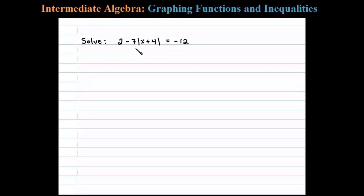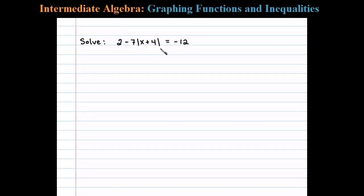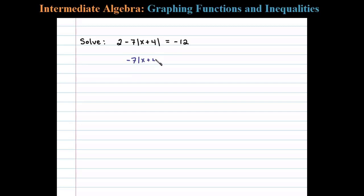Here we're asked to solve an absolute value equation. We begin by isolating the absolute value. To do that, subtract 2 on both sides. That'll leave us with negative 7 times the absolute value of x plus 4 equals negative 14.